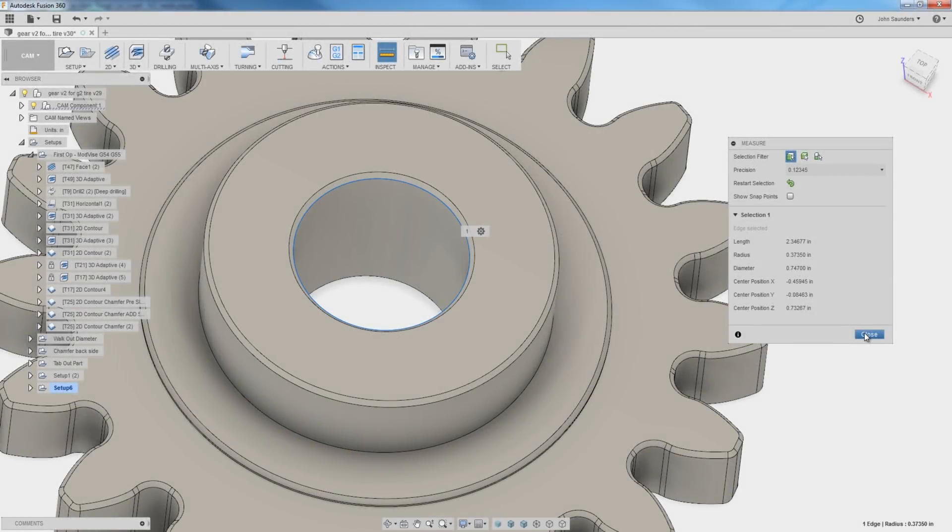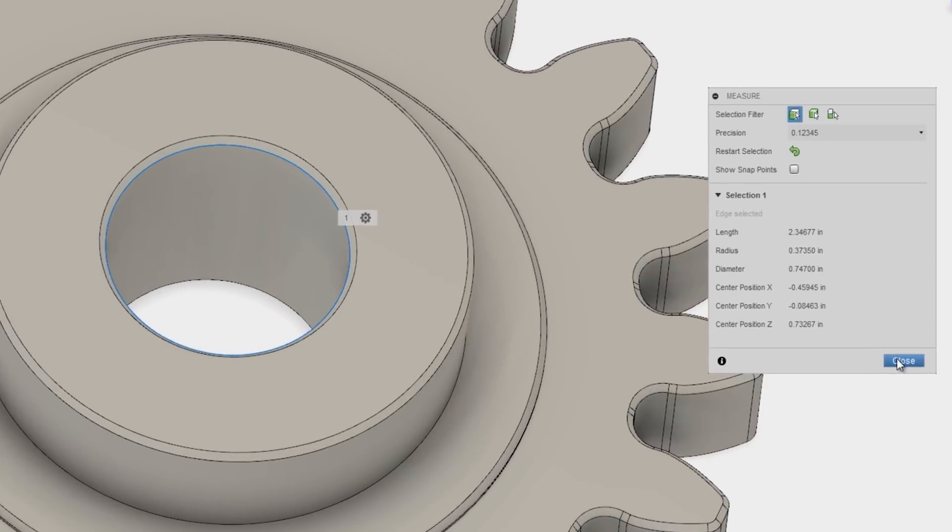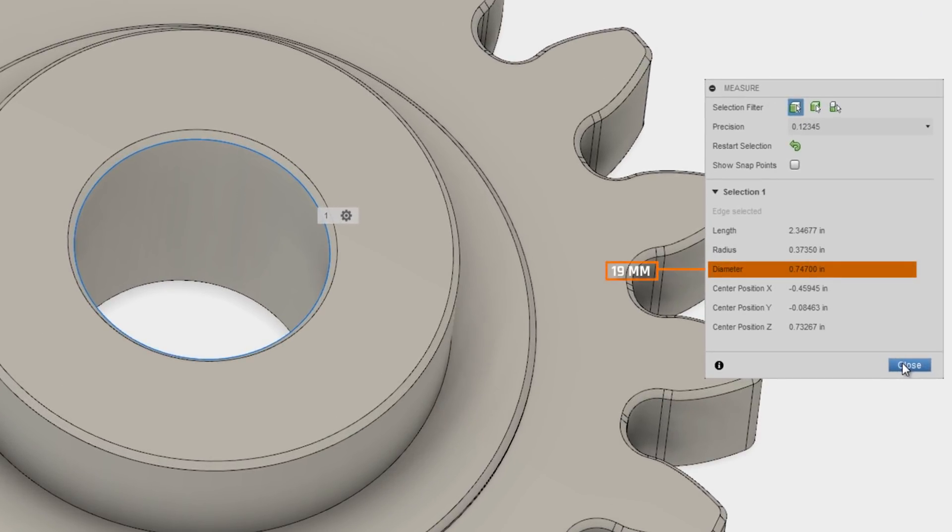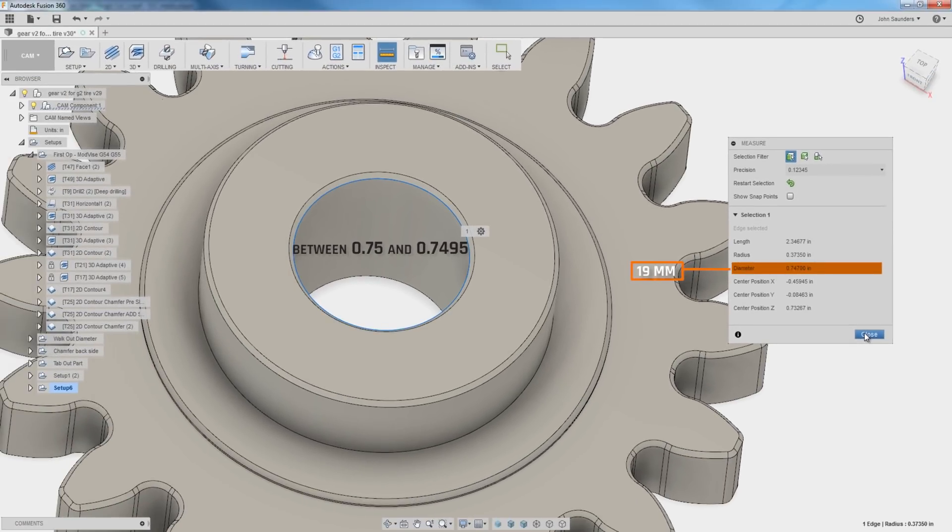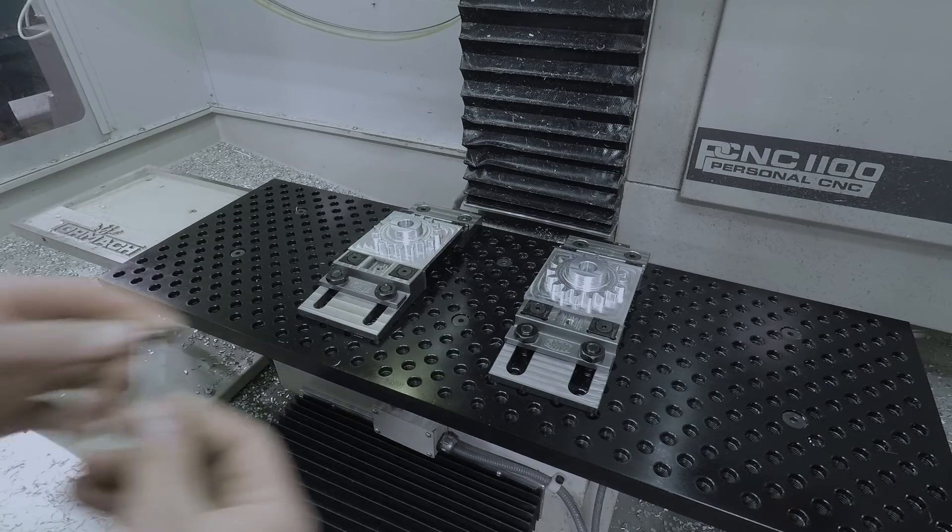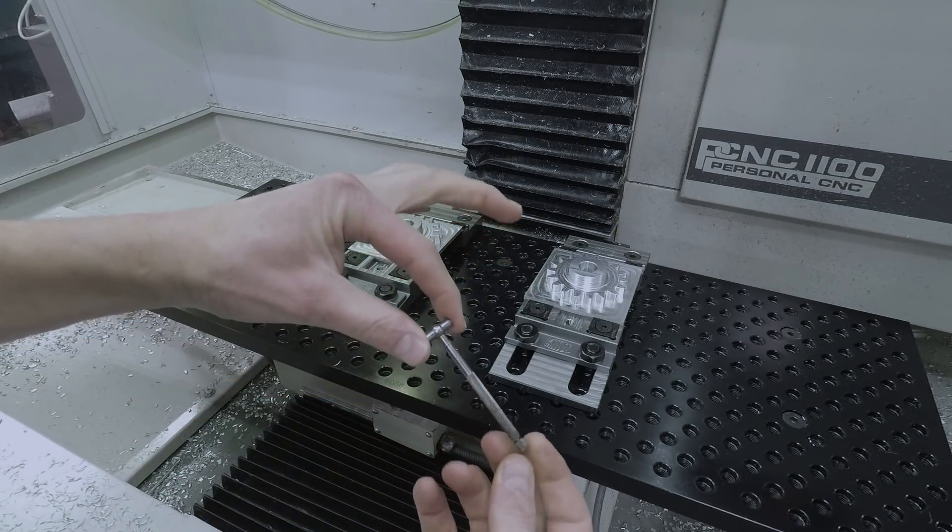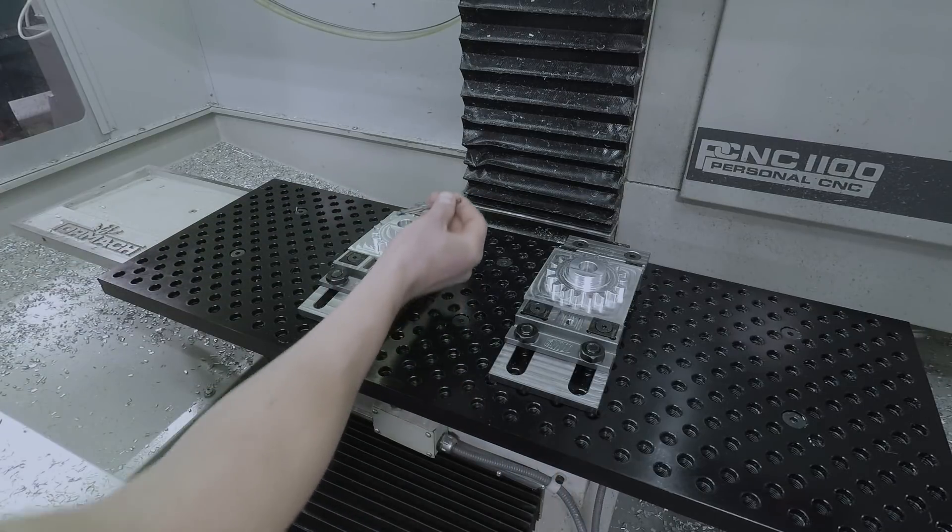So let's measure our bore. The CAD model was actually 0.747. And Ed has been doing a great job modeling up this project. I asked him, what do we want that fit to be? And he said, we really want it between 750 and maybe half a thou under it. The bearings were miking out to about 7505 or so, maybe 751. So we don't need much of a press fit. 1,000th of an inch should be plenty.